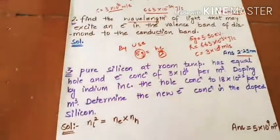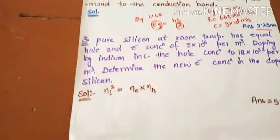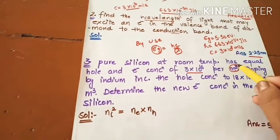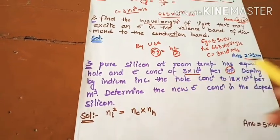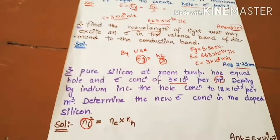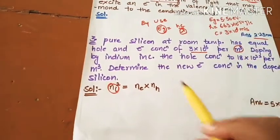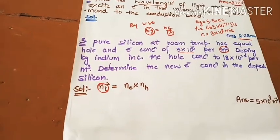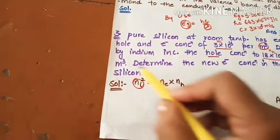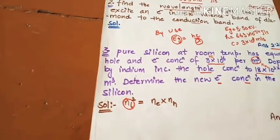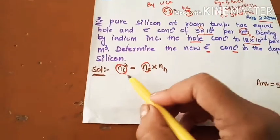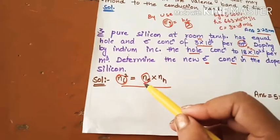Pure silicon at room temperature has equal hole and electron concentration of 3 into 10^16 per meter cube. Equal means Ni for intrinsic, which has equal holes and equal number of electrons. Doping by indium increases the hole concentration. Determine the new electron concentration. Ni square is equal to Ne into Nhi.